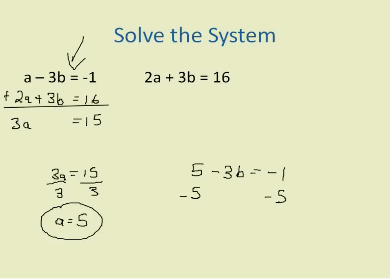That will give me negative 3b is equal to negative 6. I divide both sides by negative 3 for my final answer of b is equal to 2, positive 2.